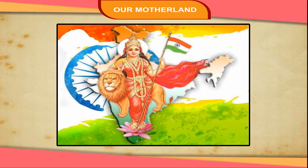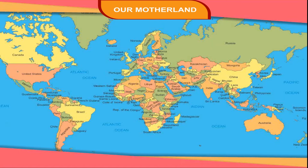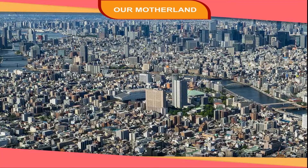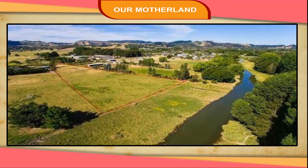India is our motherland. It is the seventh largest country in the world in area and the second largest country in the world in population. The surface of the land in India is not the same everywhere. It varies from region to region.